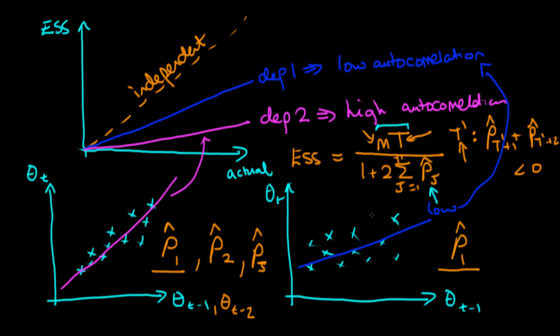To summarize: effective sample size is a way of gauging the efficiency of a given dependent sampling algorithm. It tells us the equivalent number of samples from an independent sampler that would result in similar information about a given parameter. Importantly, the worth of a sampling algorithm isn't measured in samples per second, but in effective samples per second — an algorithm producing many samples may be outperformed by one that takes longer per sample but conveys much more information about the target density.